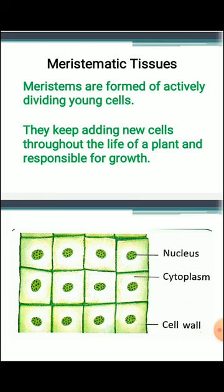Let's start with meristematic tissue. Meristematic or meristem tissues are formed of actively dividing young cells — they divide very quickly and rapidly. They keep adding new cells throughout the life of the plant and are responsible for plant growth. Meristematic cells are oval, small, and have thin walls. There are no intercellular spaces between the cells. The nuclei are large and centrally located, and vacuoles are either absent or very small.